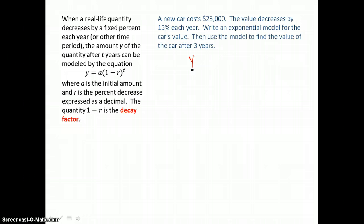So we want to use our formula to write our model. y is going to be the value at any point in time. a is going to be the initial amount or initial value of this vehicle. And the rate is the rate at which it's decreasing. It's decreasing at a rate of 15% each year, but we want to put that in our equation as a decimal. So 15% is equal to 0.15. And we'll raise it to the t power. t is time in years.